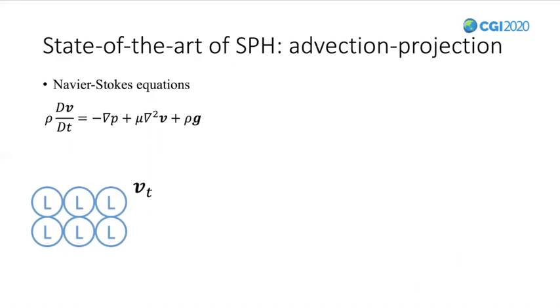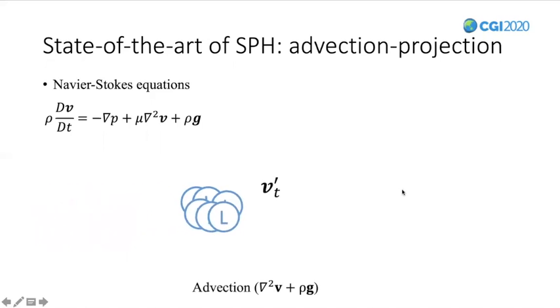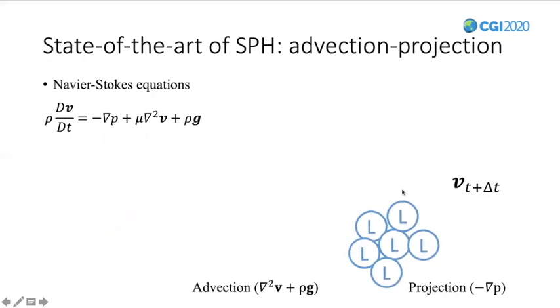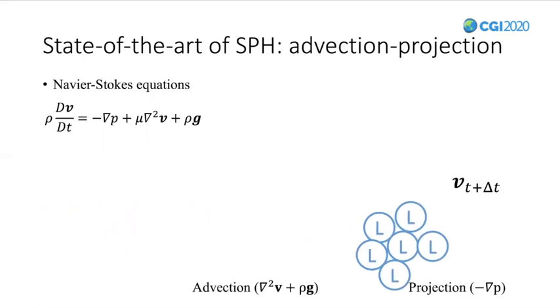Between two time steps, the gravity and the viscosity are first considered to alter the speed of each particle. This is called the advection step. Then, the pressure of them is derived to reach the constant density condition, which is the projection step.